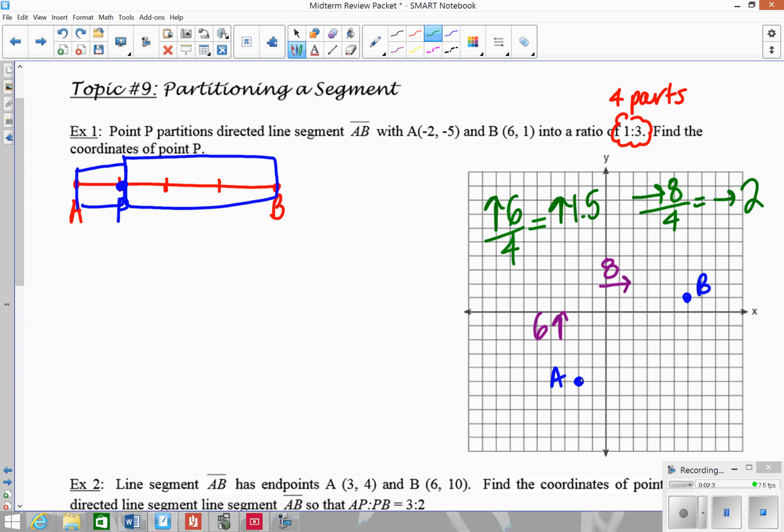So we're going to go up 1.5 and then over 2. Up 1.5, over 2. Up 1.5, over 2. Up 1.5, over 2. It should get you back to the other endpoint. And we know because of this ratio of 1 to 3, P has to be this coordinate right here. So 0, 3.5.